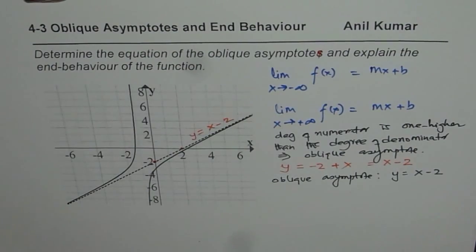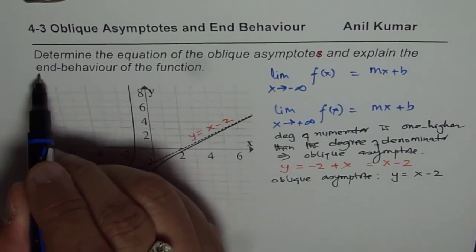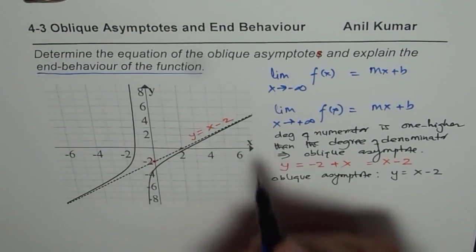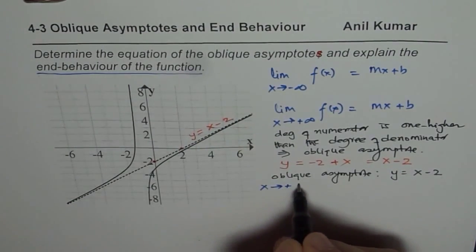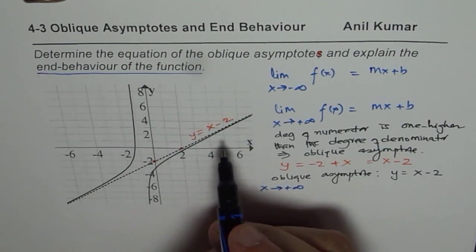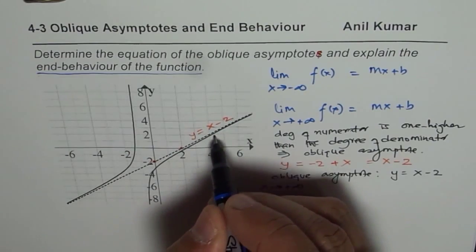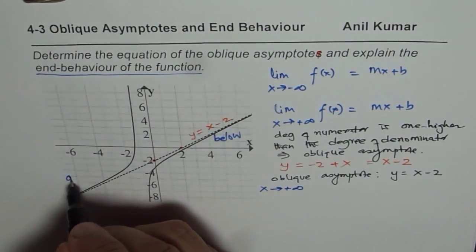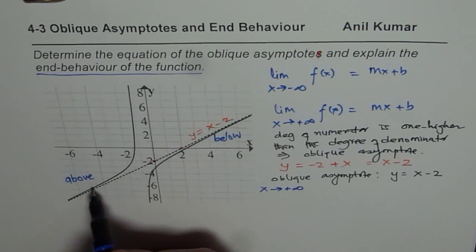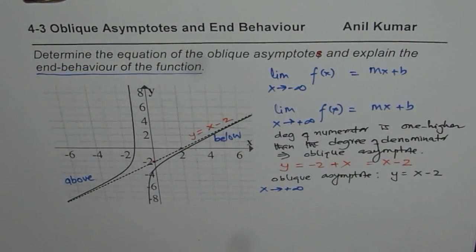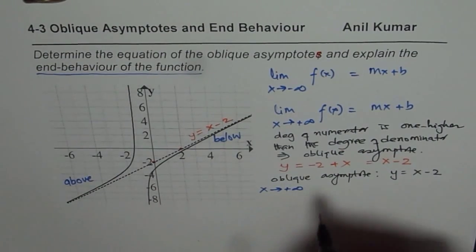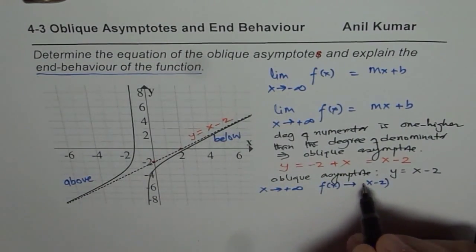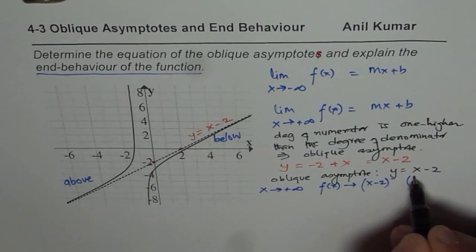Another important thing to consider is end behavior — the behavior near the asymptote. We have to see whether, when x approaches positive infinity, the function approaches from above or below. In this case, you can clearly see it approaches from below — the value of the function is less than the value of the line. So the function approaches the oblique asymptote x minus 2 from below as x approaches positive infinity.